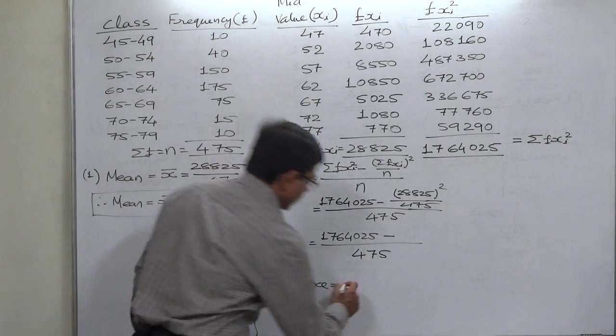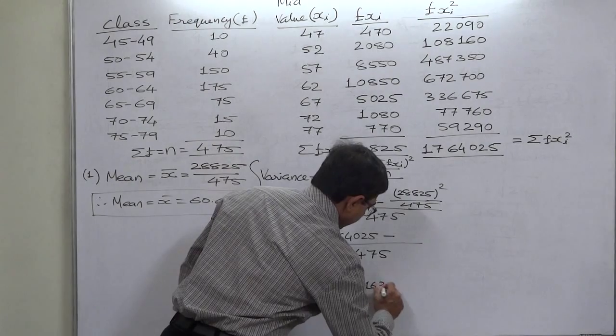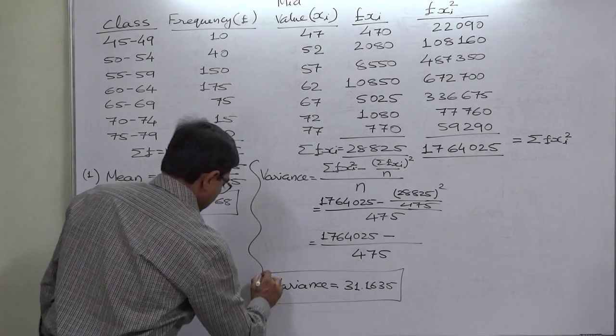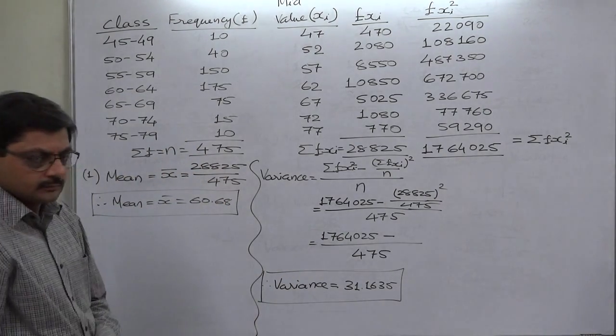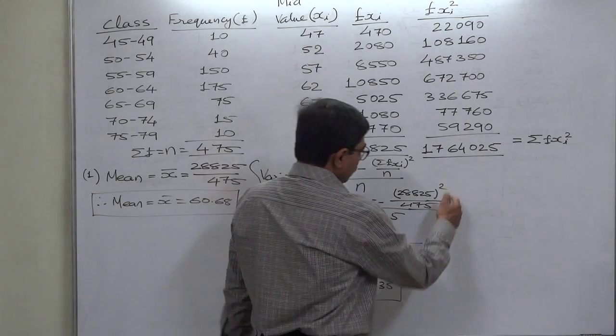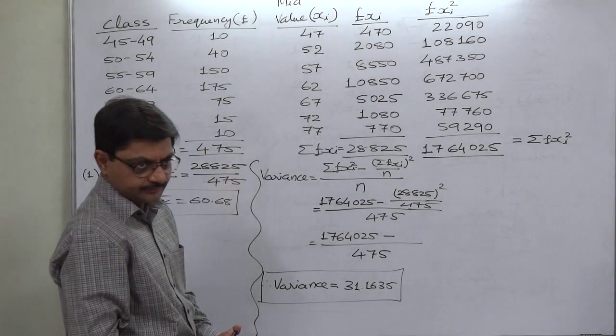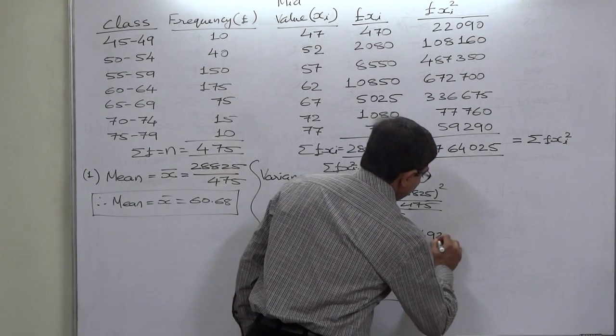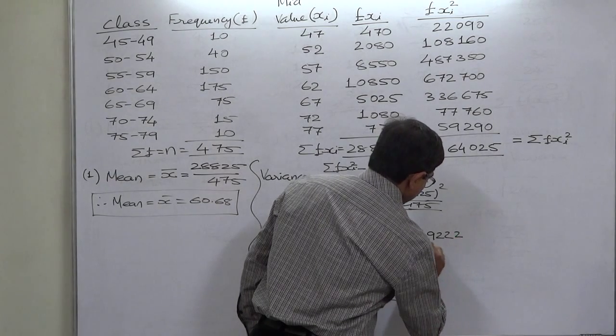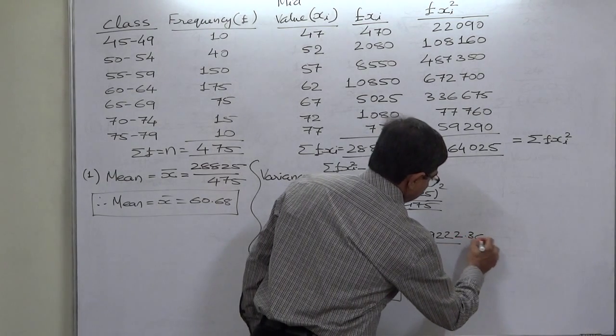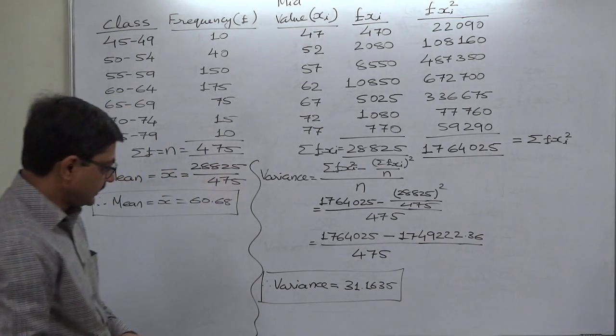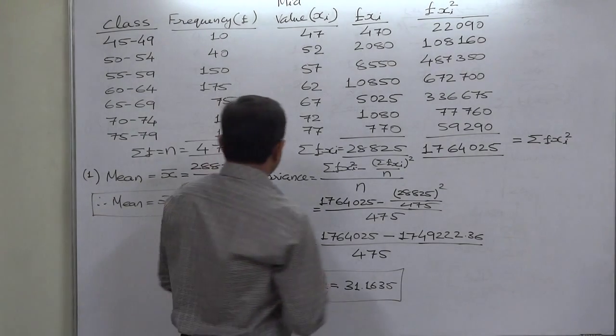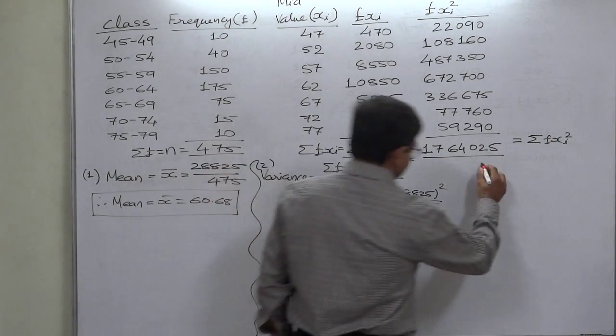31.1635. Now can you give me this amount, the result of 28,825 the whole square divided by 475? The result is with us, variance is approximately 31 we can say that. So this was variance, that is calculation number 2, and now the last.